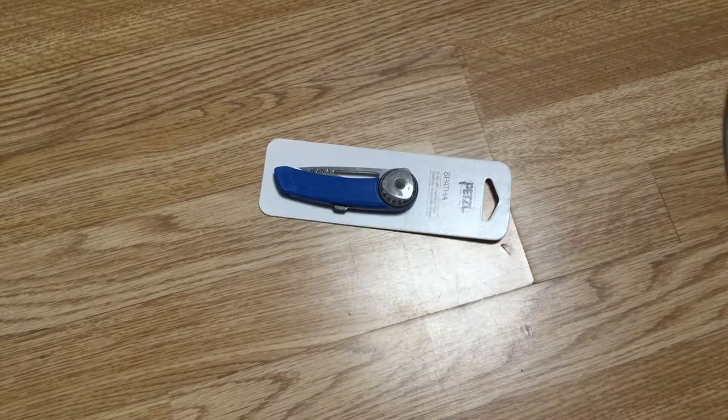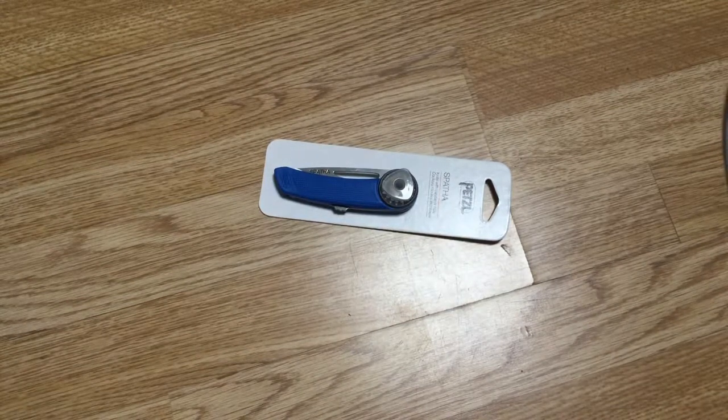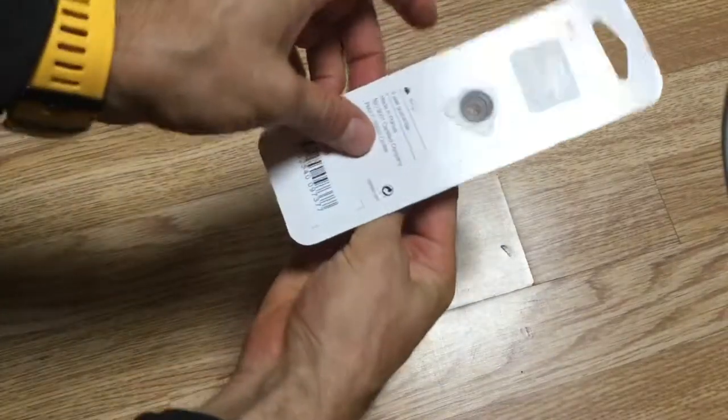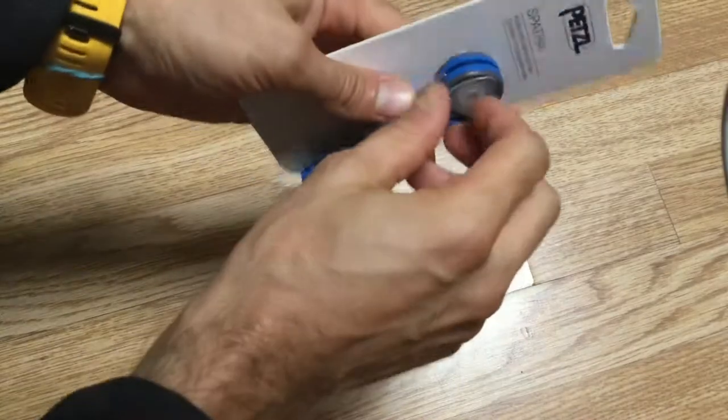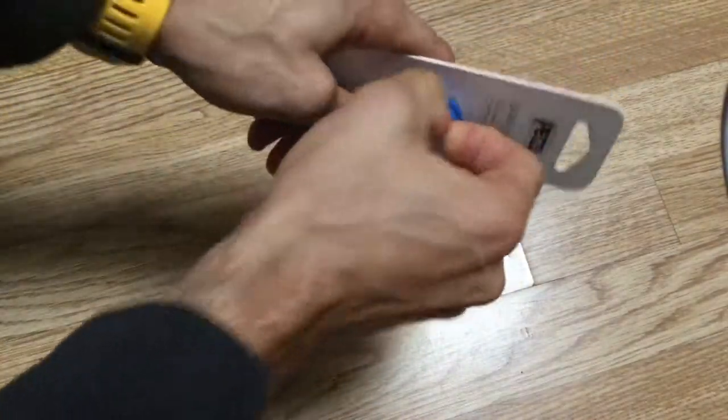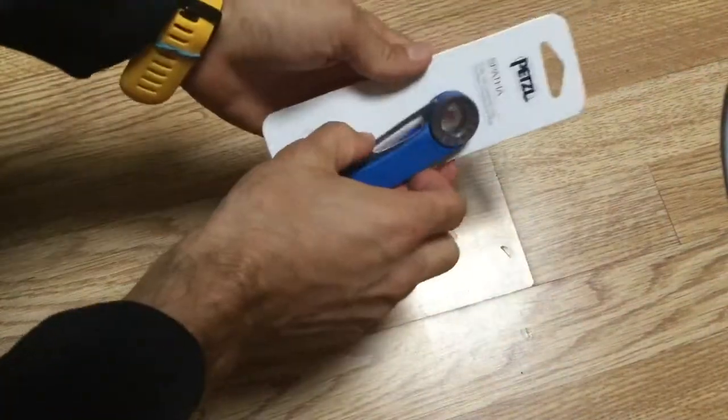Hi guys, this is the Petzl Spatha climbing knife. It comes in a little wrapper with a plastic buckle and then the knife itself. You can just undo that to pull it out.